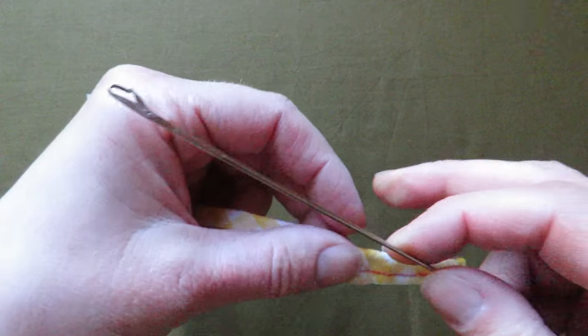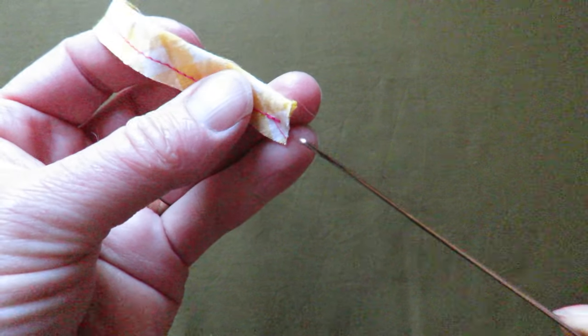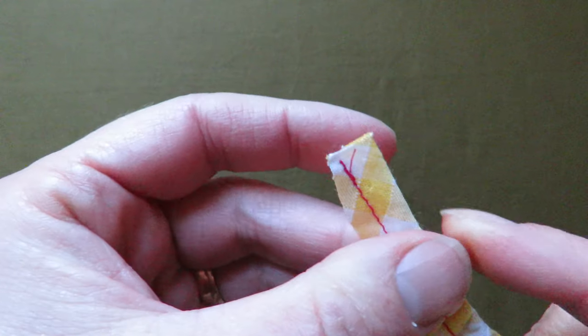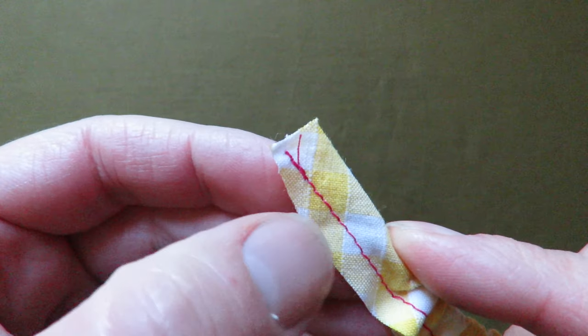So you take this end and slide it into your fabric tube. You can see I've already trimmed this end a bit so it's easier to turn through.